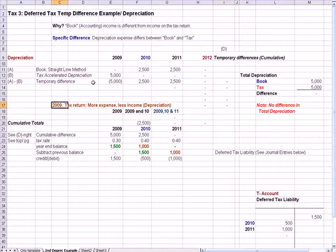I also mentioned that in 2009, there was more expense, specifically more depreciation expense, and there was less income because of the accelerated depreciation method. You're recognizing it all in the current year.